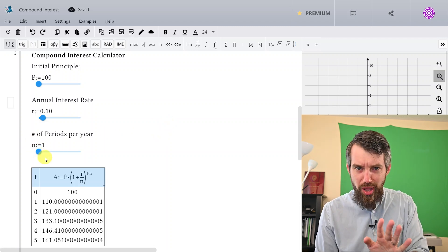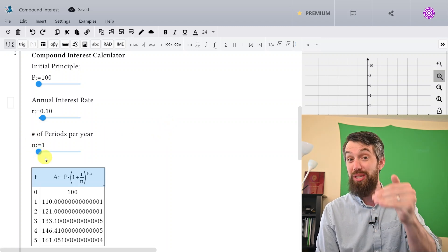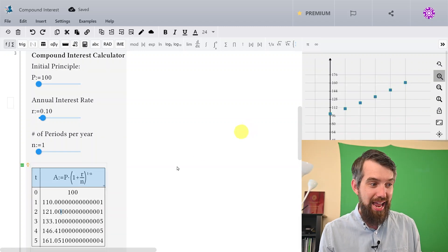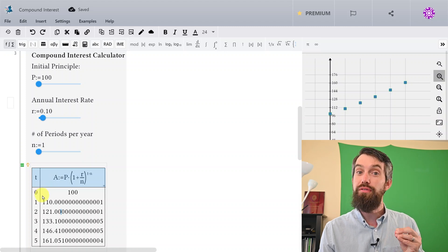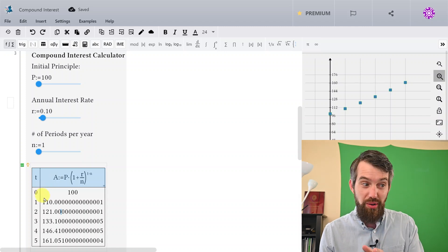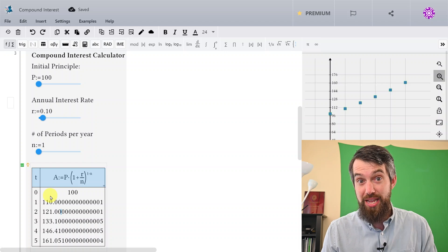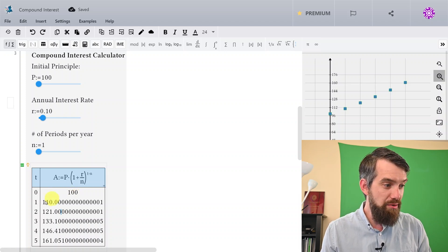Don't worry about this, we're going to elaborate this a little later on in the video. What I again get is this nice table of values that tells me the amount A after any number of years. But what's critical here is that it's not just going up by 10 bucks every time. From 100 to 110, yes that was 10 bucks.